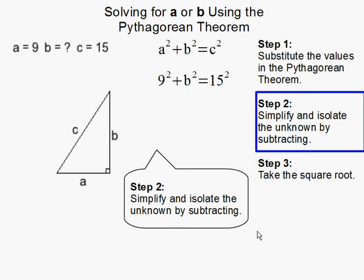Step 2: Simplify and isolate the unknown by subtracting. Now, we are to solve for B, so the first thing we should do is to simplify our equation. 9² is 81. 15² is 225.